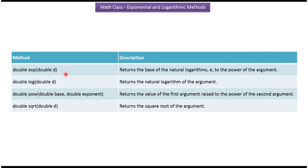The exp method returns the base of the natural logarithms e to the power of the argument. The log method returns the natural logarithm of the argument. The pow method returns the value of the first argument raised to the power of the second argument. The sqrt method returns the square root of the argument.